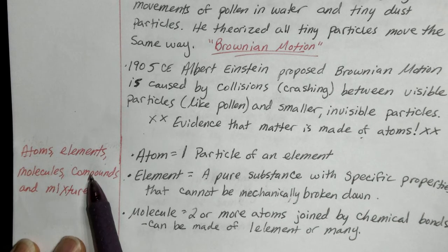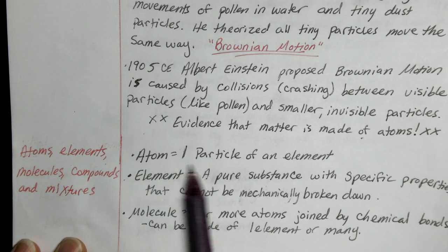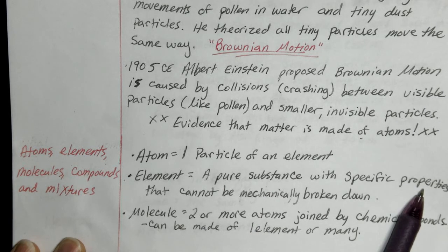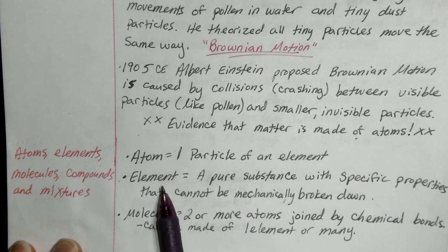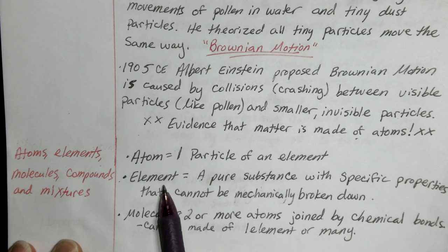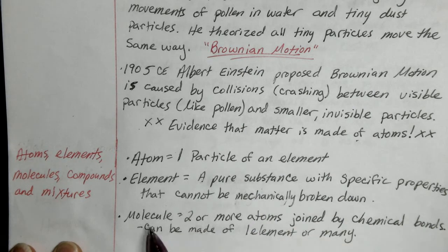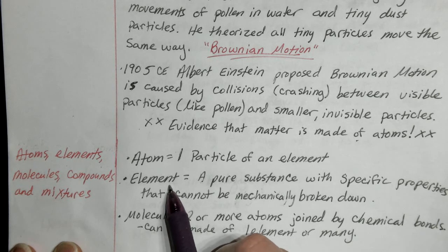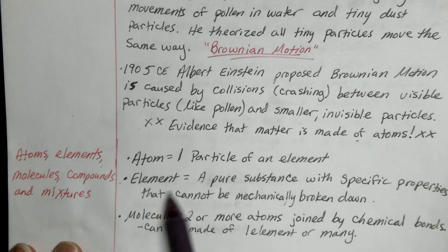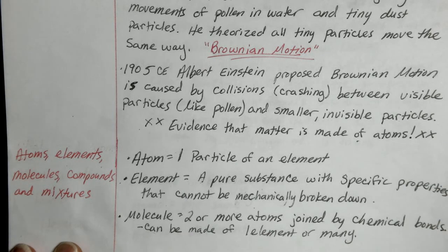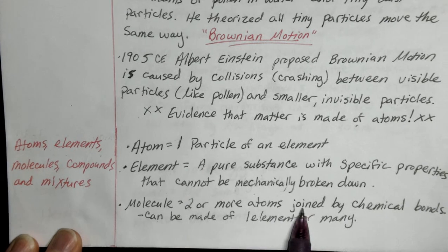So: atoms, elements, molecules, and compounds. An atom is one particle of an element. An element is a pure substance with specific properties that cannot be mechanically broken down — I can't take gold and cut it in half to get something different; it just makes two pieces of gold. I can't filter an element. A molecule is two or more atoms joined by chemical bonds; they can be made of one element or of many elements.